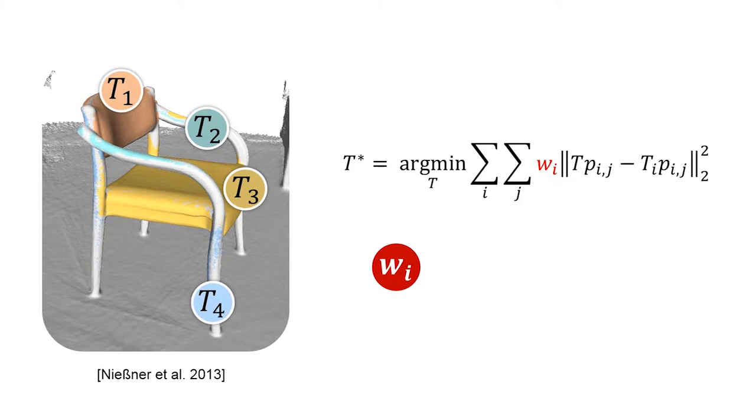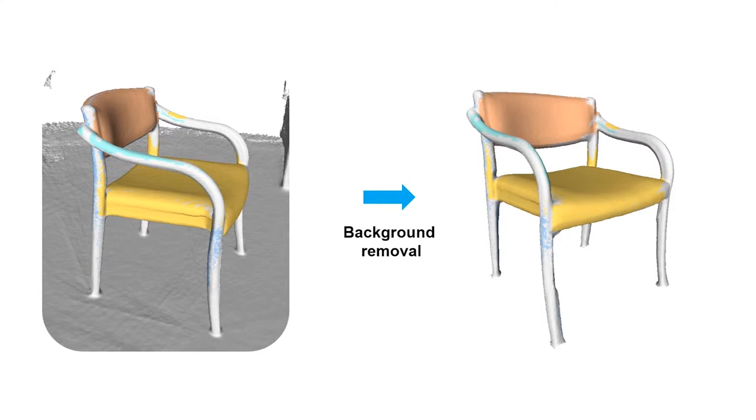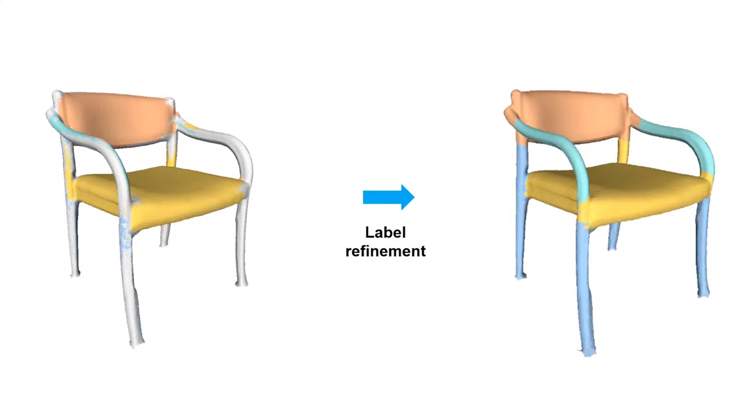Towards this goal, we define a weight for each part based on the labeling confidence, part size, and normal variation. Once the object is reconstructed, we remove the background and keep only the object voxels, and further use the graph cuts method to smooth the labeling of the object voxels.